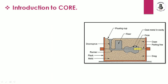Starting with the pouring cup, that is connected with the down sprue — a vertical passage for filling molten metal towards the cavity. The down sprue is connected with a runner. So by the pouring cup, down sprue, runner, and riser, the molten metal enters into the cavity.